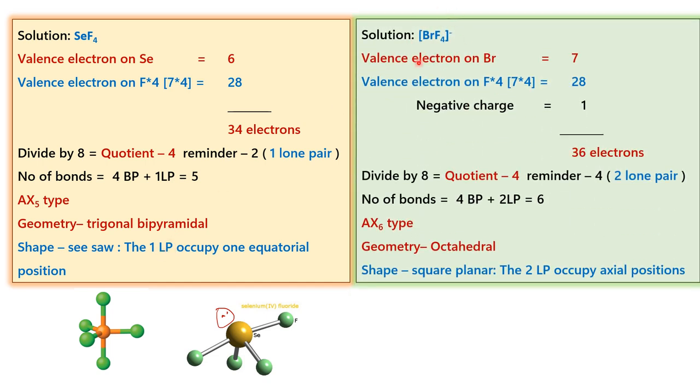Now, when we take bromine tetrafluoride to the power minus, we know bromine and fluorine both of them are halogens. It is 5 into 7 which is 35 and then there is one negative charge. So the total number of valence electrons will add up to 36. Then you divide it by 8, you get a quotient of 4 and the remainder divided by 2 will give you 2 lone pairs of electrons.